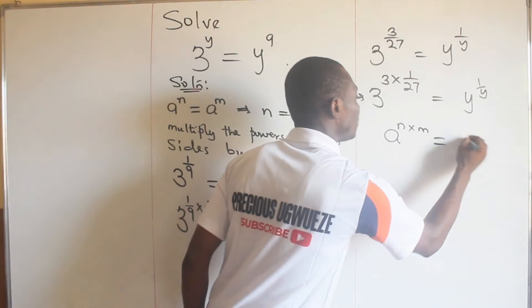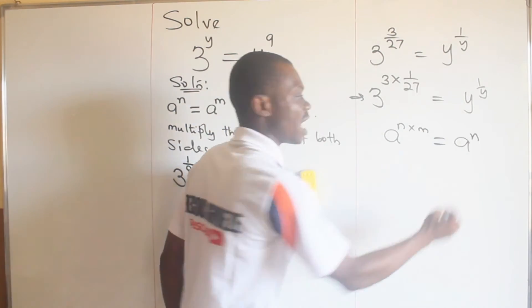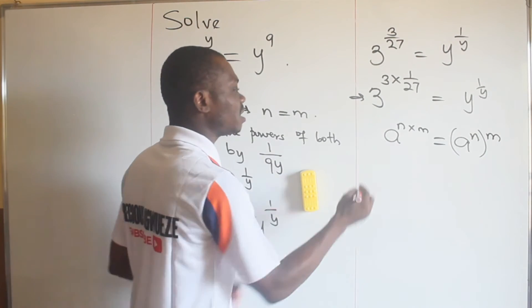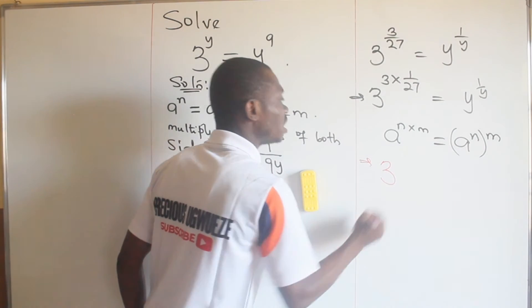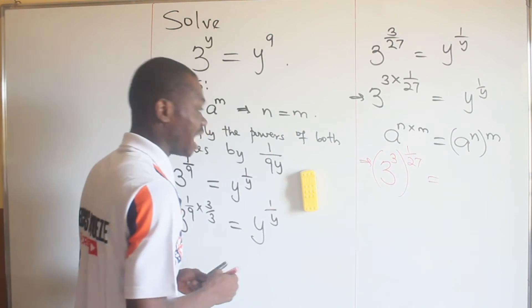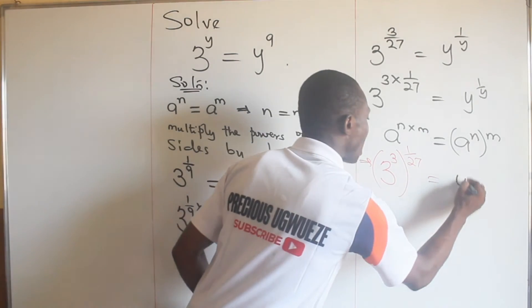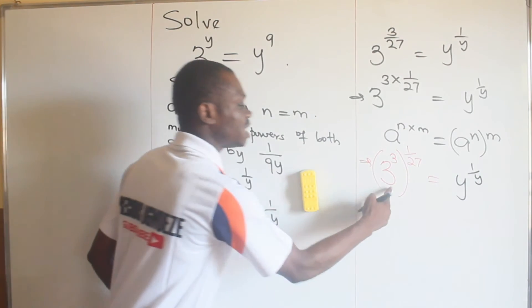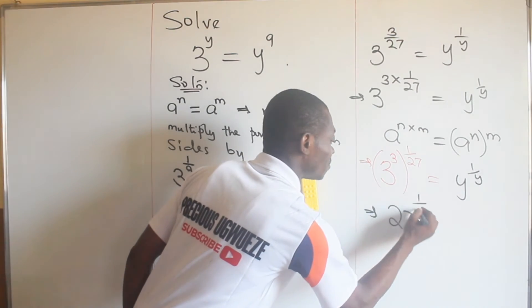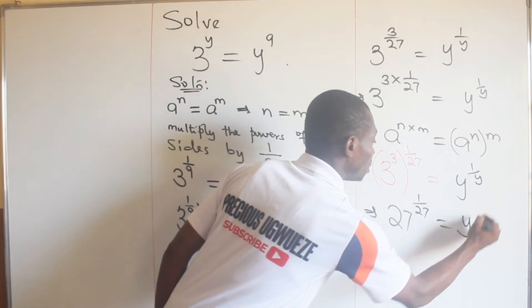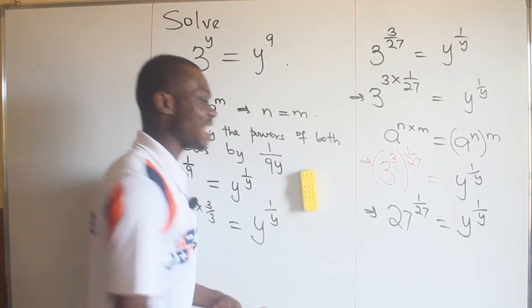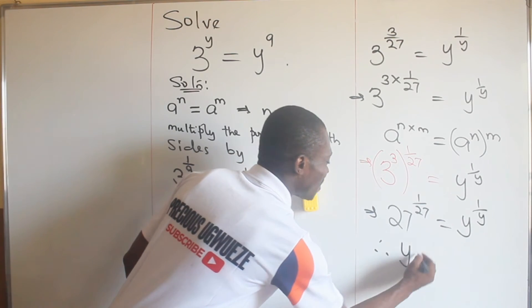There is a rule that says a raised to the power of n multiplied by m is the same as a raised to the power of n, all raised to the power of m. So this is the same as 3 raised to the power of three, all raised to the power of one over 27, equal to y raised to the power of one over y. Since 3 raised to the power of three is 27, this becomes 27 raised to the power of one over 27 equal to y raised to the power of one over y, so y equals 27.